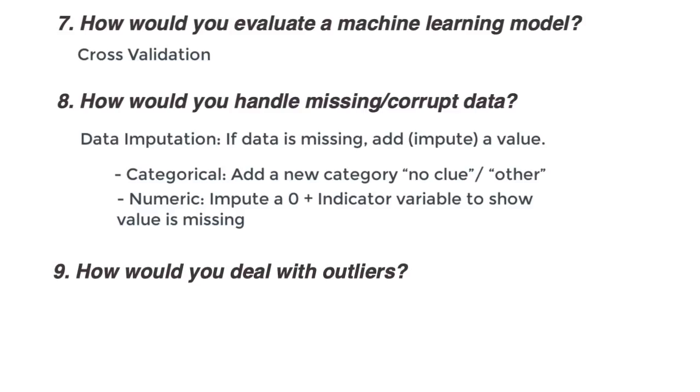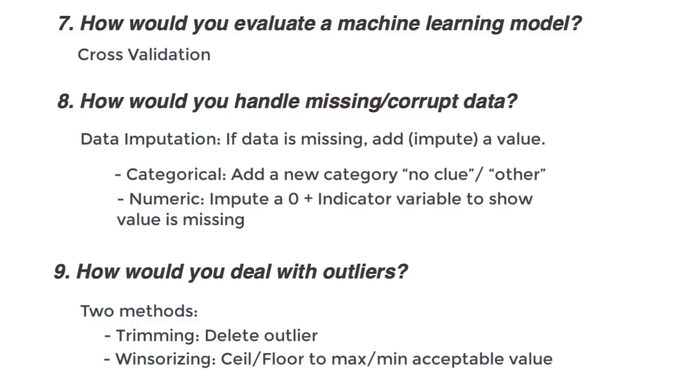How would you deal with outliers? Analyze the data with and without outliers. We don't know if removing them is going to have some adverse effect after all. That said, there are two methods of dealing with outliers. One is trimming, where we delete the outlier altogether. And the other is winsorizing, where we seal or floor the value to the closest, that is either the maximum or minimum, acceptable non-outlier value. This is usually the preferred technique.